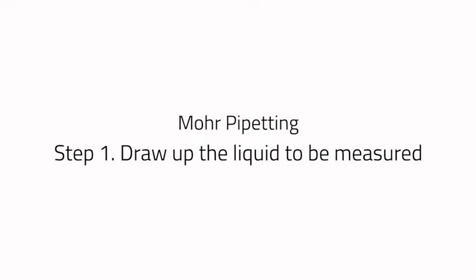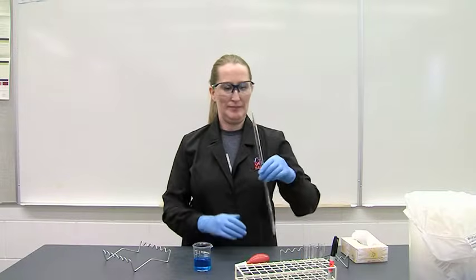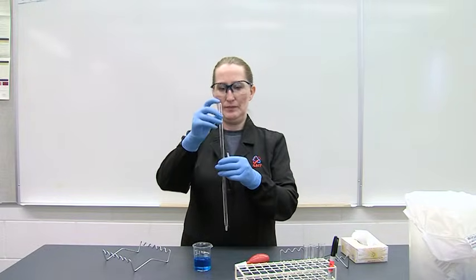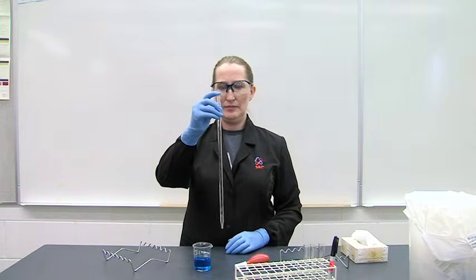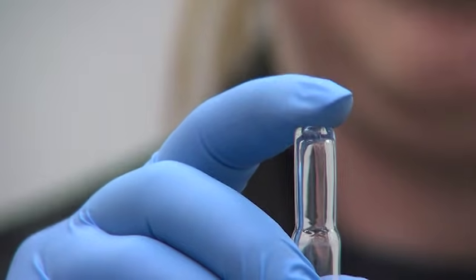Step 1. Draw up the liquid to be measured. Hold the stem of the pipette between the thumb and the middle fingers of your dominant hand. Allow for the movement of the index finger on and off the top of the stem.